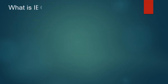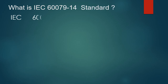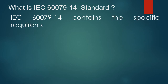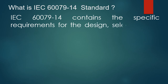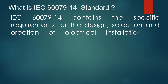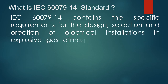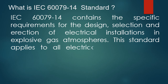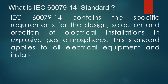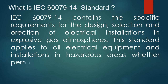What is IEC 60079 Part 4 standard? IEC 60079 Part 4 contains the specific requirements for the design, selection, and erection of electrical installations in explosive gas atmospheres. This standard applies to all electrical equipment and installations in hazardous areas, whether permanent, temporary, portable, transportable, or handheld.